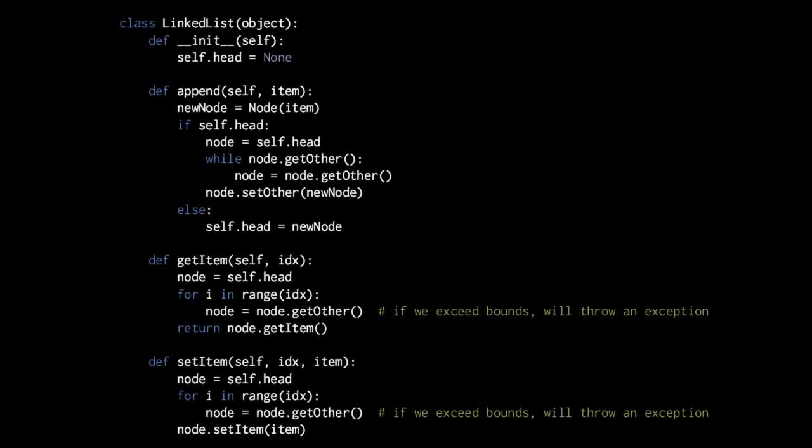Lastly, the setItem method looks essentially the same, except we specify an item parameter and in the last line, instead of returning a value, we call node.setItem passing in the item. We use the same loop to find the node at a certain index; it's just that we use setItem instead of getItem once we find the node.